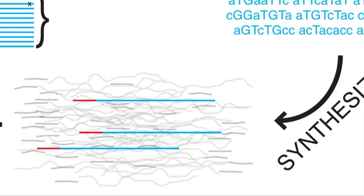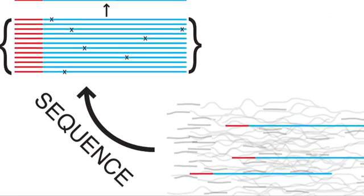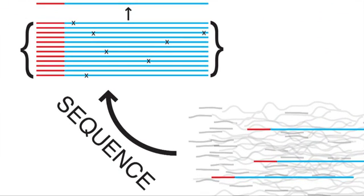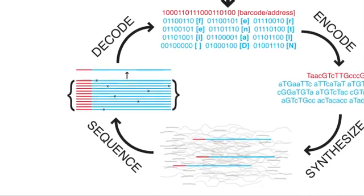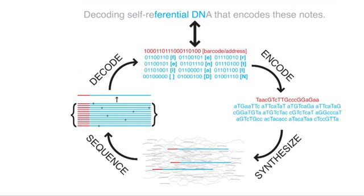Then we just add PCR primers to the end of those and synthesize it on a microfluidic chip. What's shown is the red barcode and the blue data block, essentially, in a larger context of other barcodes and data blocks. When we sequence the whole thing, we get many copies of each particular barcode sequenced. We were able to reconstruct the message by decoding it back to ones and zeros and then back to text. And because we have the address, we know where it goes back, so we're able to reconstruct the original digital information that was encoded.